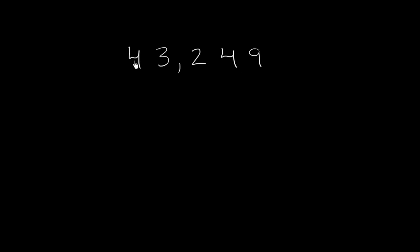So let's just think about what each of these digits represent. The 9 is in the ones place, so it literally represents 9 ones. This 4 on the right, I should say, is in the tens place. So it literally represents 4 tens, or 4 times 10, or 40.